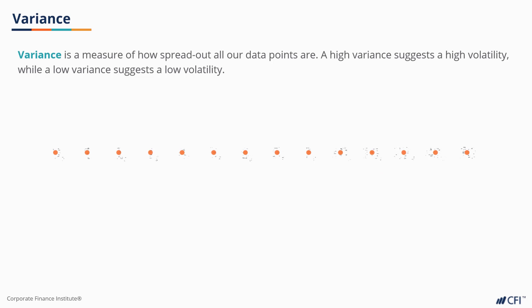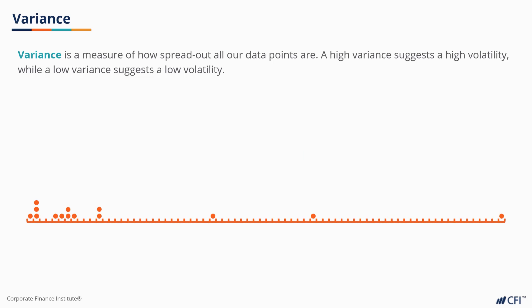Variance is a measure of how spread out all our data points are. A high variance suggests a high volatility, while a low variance suggests a low volatility. This measure is quite popular with investors, who use it to describe the risk of certain investments. Accountants will also use variance to describe how much a budget item may be expected to swing month to month. By comparing past budgets to actuals, we can quantify the variance of particular budget items.